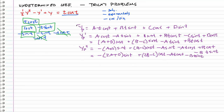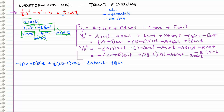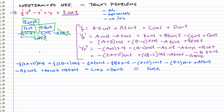Now we have all three forms — yp, yp', and yp double prime — and we plug them back into our differential equation. I'll go ahead and write this out; I'll fast forward through it because it's a lot of writing. After substituting, we get the combined expression on screen.